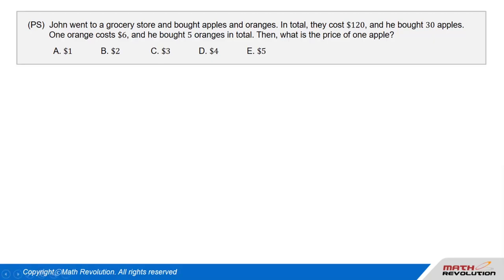Question. P.S. John went to a grocery store and bought apples and oranges. In total, they cost $120 and he bought 30 apples. One orange costs $6 and he bought 5 oranges in total. Then, what is the price of one apple?